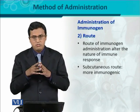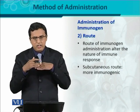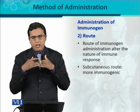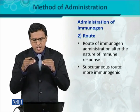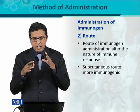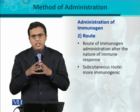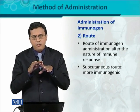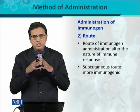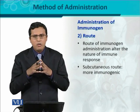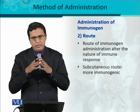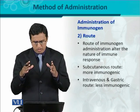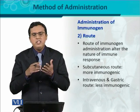There is the subcutaneous route. Subcutaneous means underneath our skin — beneath the dermis and epidermis layer. If the immunogen enters there, its immunogenicity is more. That is why most vaccinations are given underneath the skin, because when they enter the body from that route, the ability to generate an immune response is greater. That route is called the subcutaneous route.